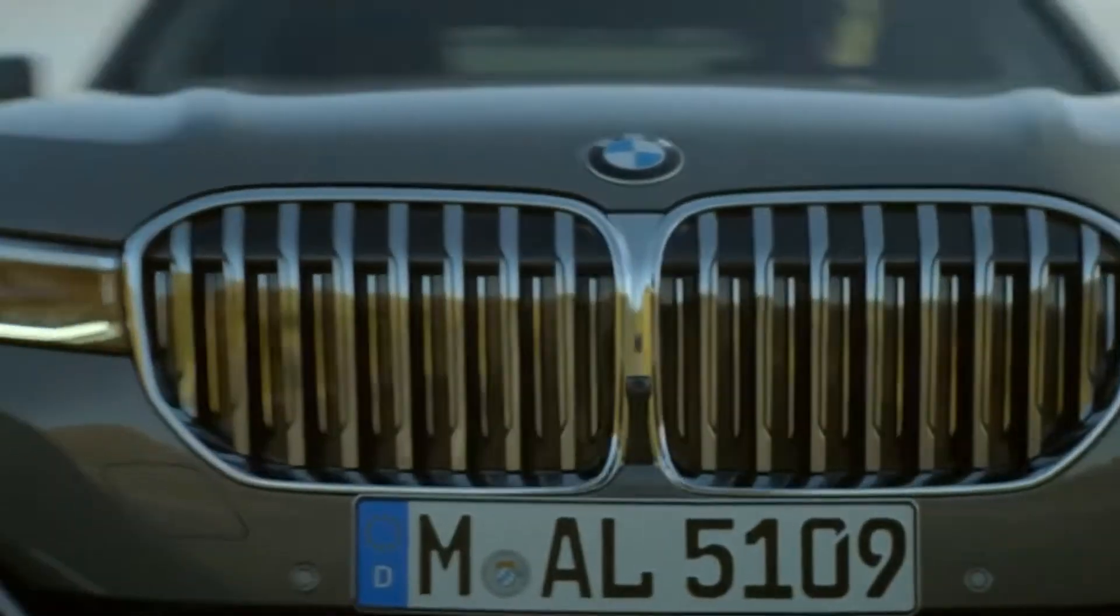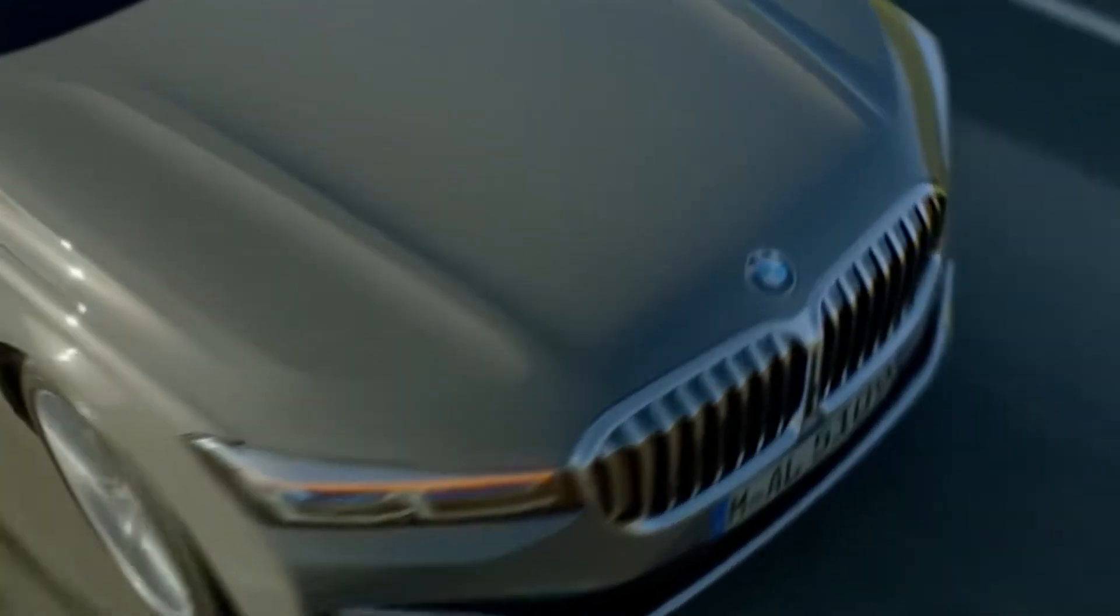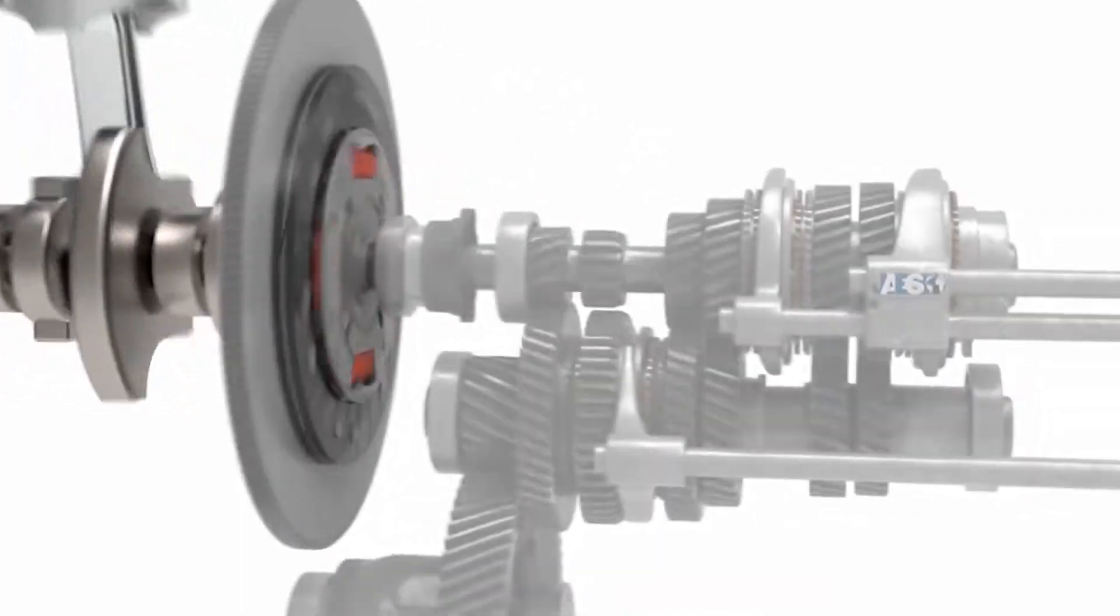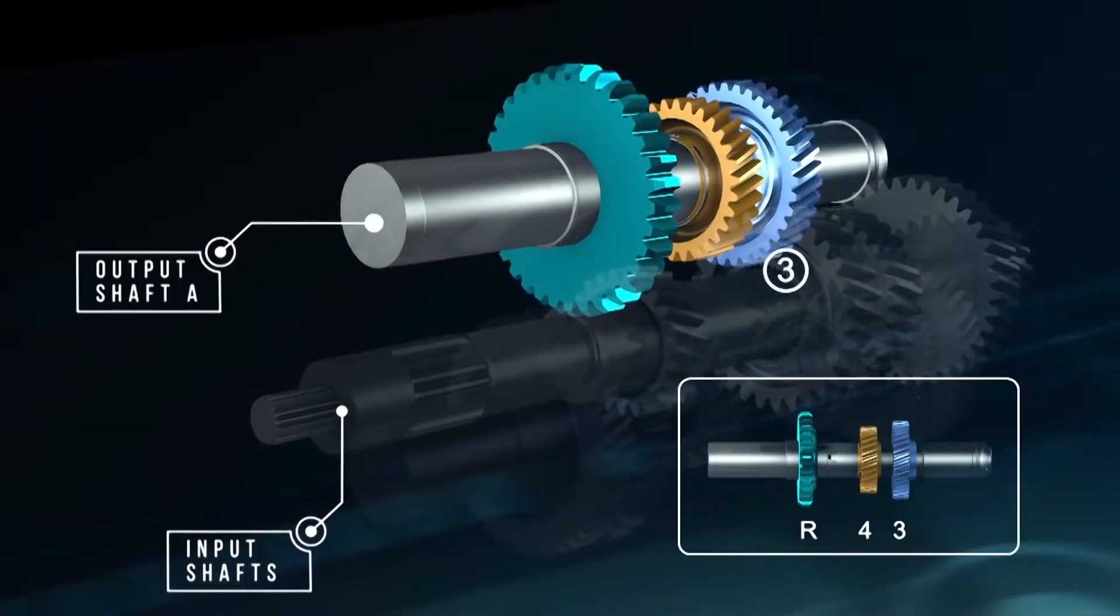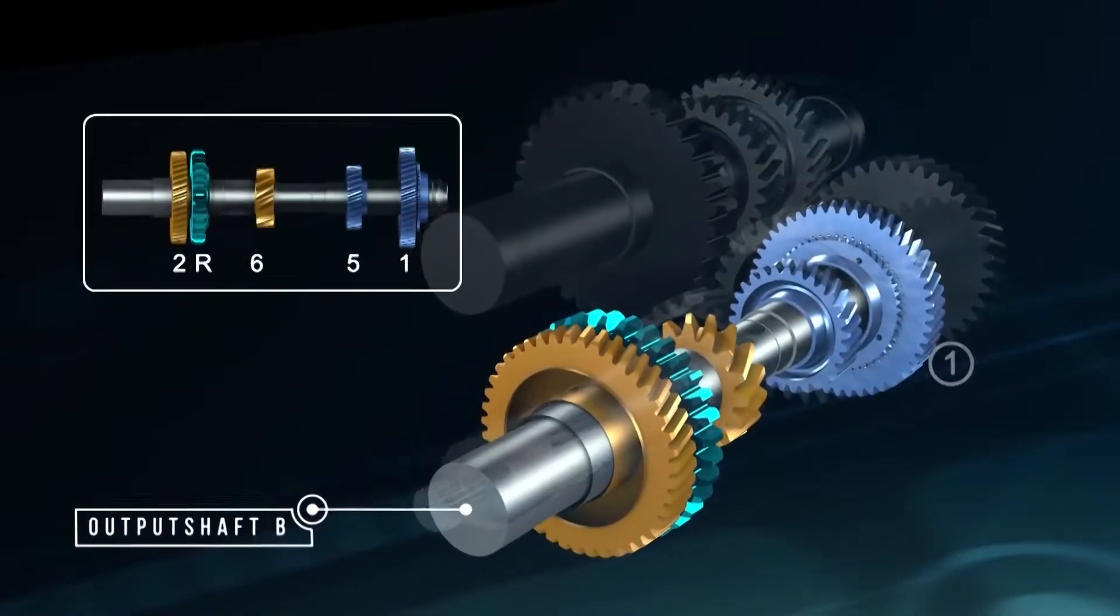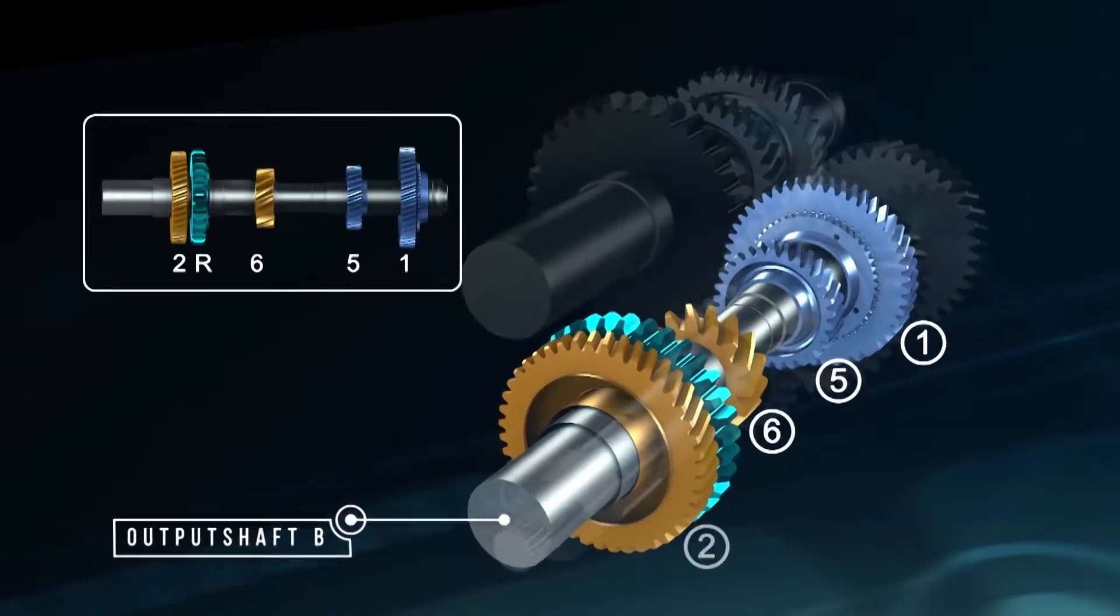Steptronic. BMW refers to their torque converter auto box as a steptronic transmission. The steptronic transmission uses the same torque converter mechanism as the manual transmission, but with dual clutches. Similar to a DCT box, one clutch controls odd-numbered gears, while the other controls even-numbered gears.